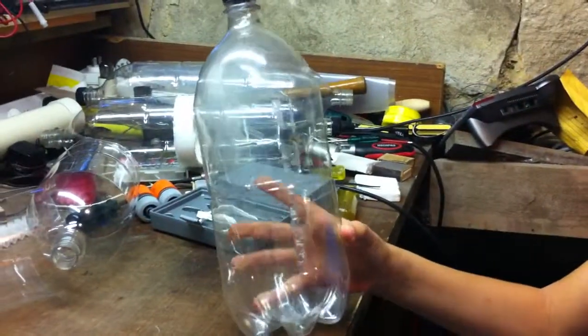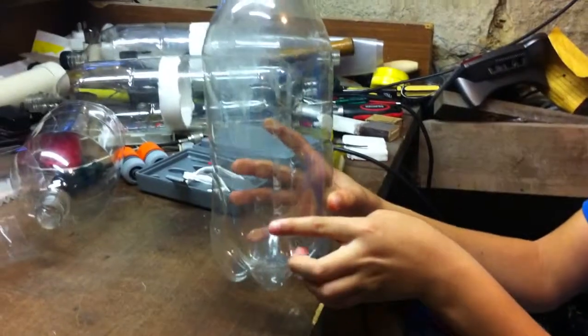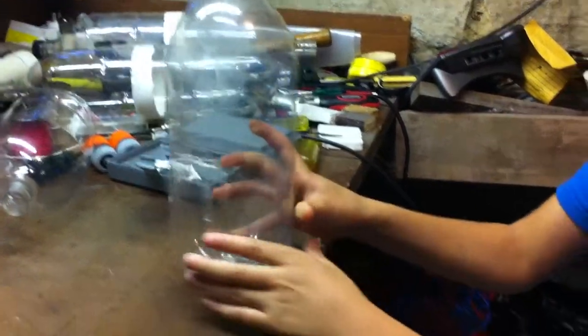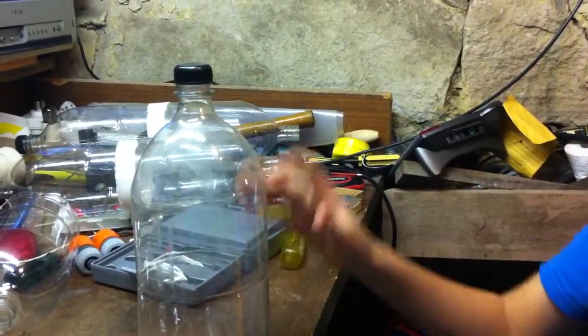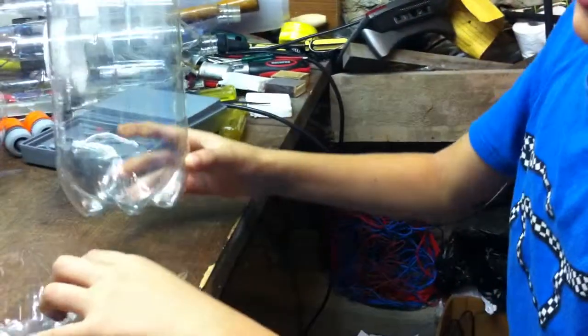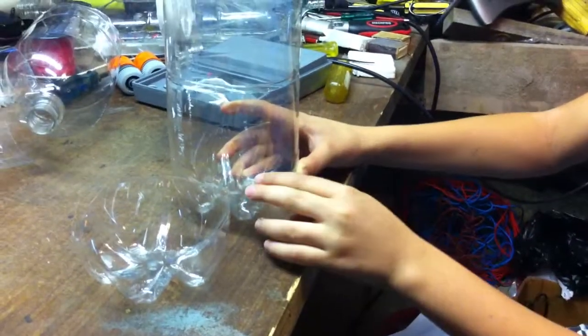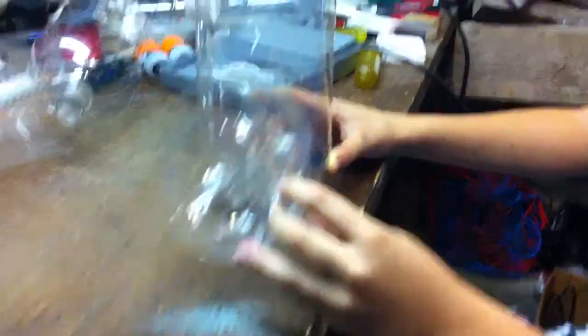First you start off with a basic bottle. You remove the label glue with minimal turpentine and cut off this cap ring. You end up cutting off this little ridge here and throw that away.